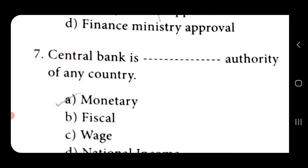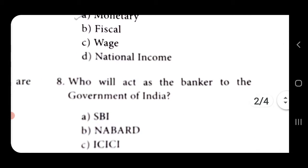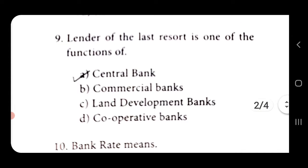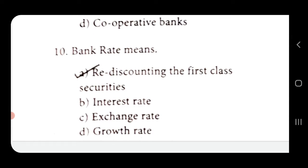Seventh, central bank is the monetary authority of any country. Eighth, who will act as a banker to the Government of India? Answer: RBI. Ninth, lender of the last resort is one of the functions of the central bank. Tenth, bank rate means re-discounting the first class securities.